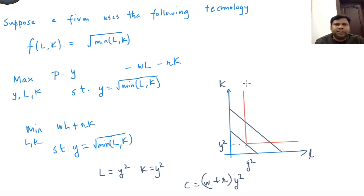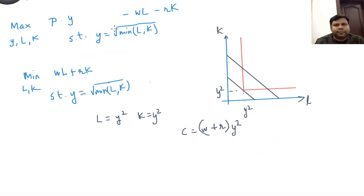Once you have this cost function, the next step is to solve for the supply. This is how you will solve for the supply. We will write the profit maximization problem: maximize with respect to y, Py minus (w plus r)y squared.